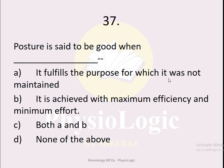MCQ number 37: Posture is said to be good when — option A it fulfills the purpose for which it was meant, option B it is achieved with maximum efficiency and minimum effort, option C both A and B, option D none of the above. The correct option is option C, both A and B. Note: there was a word 'not' in option A that should be excluded — if included, option A would be wrong and only option B would be correct.